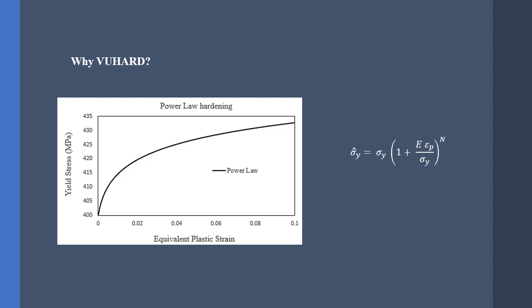Suppose that I want to model this type of plasticity in Abaqus. If I use the VU mat subroutine I have to define the elastic part, the elastic predictor, the plastic part, and I must make sure that I have the correct form for the Jacobian matrix. But if I use the VU hard subroutine I only need to worry about the plastic part and specifically the hardening part.